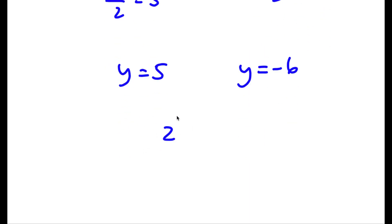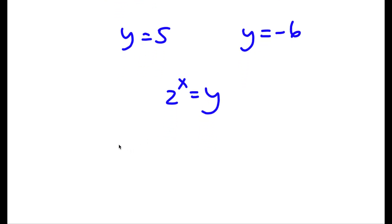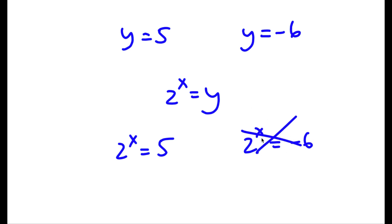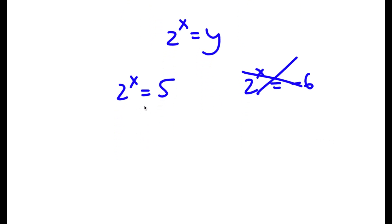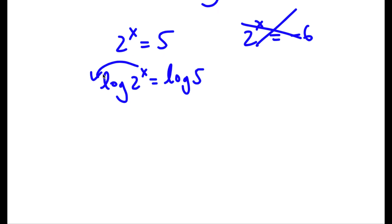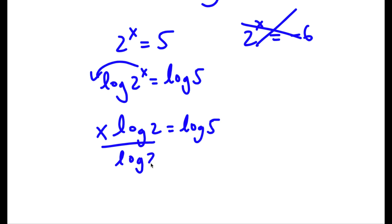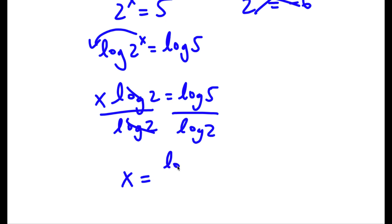Now remember, 2 to the power of x is equal to y. So this gives us two equations: 2 to the power of x equals 5, and 2 to the power of x equals negative 6. Well, 2 to the power of x equals negative 6 is invalid, because you can't raise a positive number to a power and get a negative result. So I'm simply left with 2 to the power of x equals 5, and to solve this I can take log on both sides. Then I can move my exponent, so I have x times log 2 is equal to log 5, and dividing both sides by log 2, I get x is equal to log 5 over log 2.